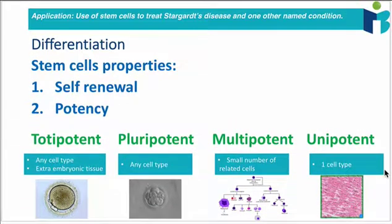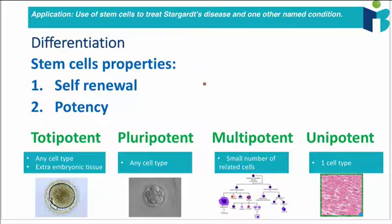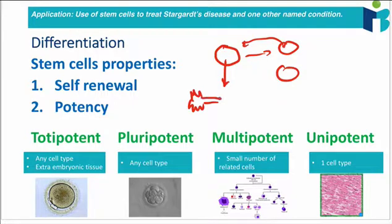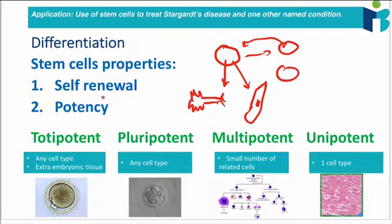So what is a stem cell? A stem cell is a cell that still has the capacity to renew itself. So a stem cell can divide to form new stem cells — it's kind of replacing itself. It also has this property known as potency, which means that it can differentiate into different types of cells. So stem cells have two properties: they can self-renew, and they have this potency — the ability to differentiate into different types of cells.